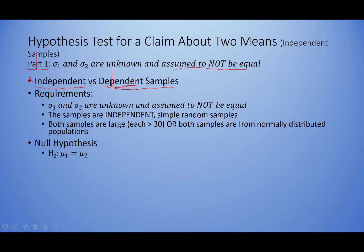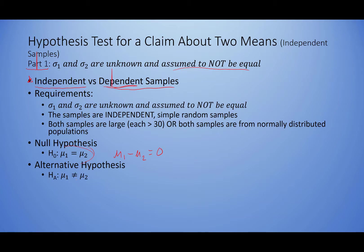Our null hypothesis can take two forms. The more common form is that the mean of our first sample equals the mean of our second sample. An alternative way is that μ₁ minus μ₂ equals zero — these are equivalent. Our alternative hypothesis can take three forms: the population means are not equal, μ₁ is less than μ₂, or μ₁ is greater than μ₂.